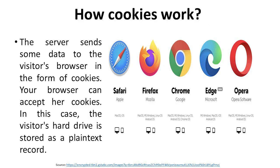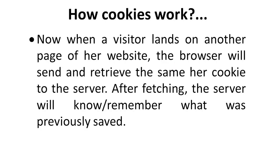How cookies work? The server sends some data to the visitor's browser in the form of cookies. The browser can accept cookies, and in this case, the data is stored on the visitor's hard drive as a plain text record. When a visitor lands on another page of a website, the browser will send and retrieve the same cookie to the server. After fetching, the server will remember what was previously saved, enhancing the personal experience of the visitor.